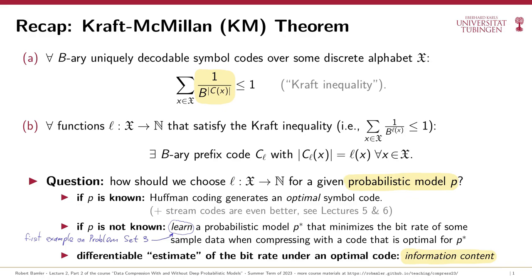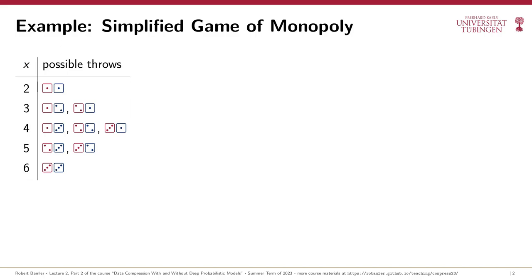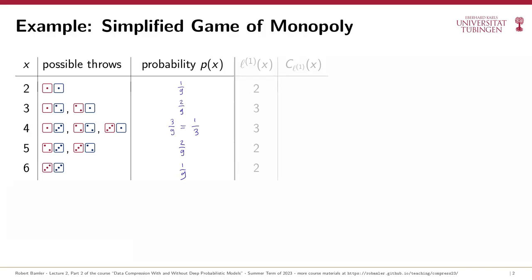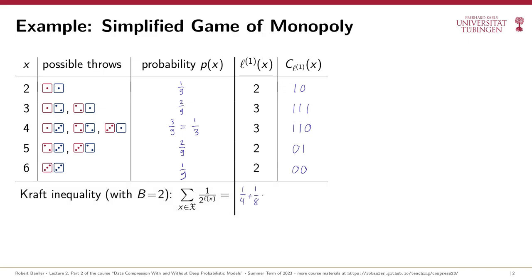Let's first remind ourselves what we mean by a probabilistic model of the data source. So far we've considered simple models where we have a discrete alphabet and assign a probability to each symbol. For example, in video 1.2 we introduced a toy model called the simplified game of Monopoly, where each symbol x is generated by throwing a pair of fair three-sided dice and recording the sum. We can then easily calculate the probability of each symbol, and if given target codeword lengths L satisfying the Kraft inequality — here the sum of 1 over 2 to the power of L equals exactly 1 — we can construct a corresponding prefix code.